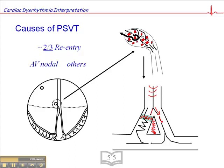In the meantime, the wave of depolarization travels around this area of non-conductive tissue, makes its way off to the rest of the myocardium, and travels back around the area of non-conductive tissue. Now when it reaches the area that was previously blocked, it finds it's able to get through. It re-enters tissue which has depolarized and re-polarized, giving rise to an ectopic impulse.